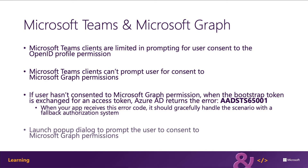In this scenario, your app should gracefully fail and handle this with a fallback authorization system that prompts the user to consent to the necessary Microsoft Graph permissions.